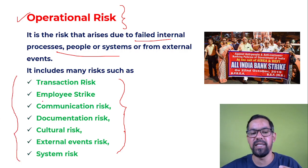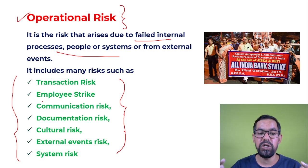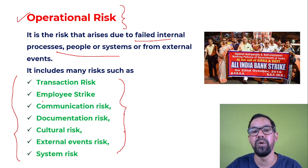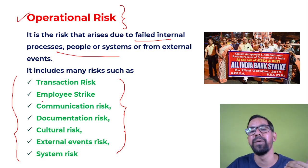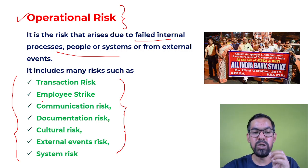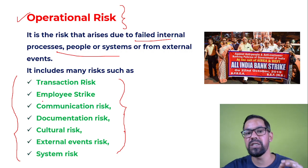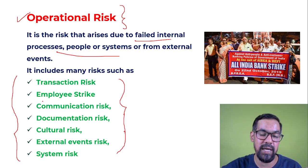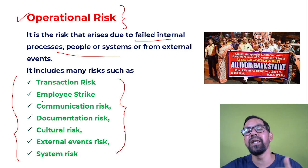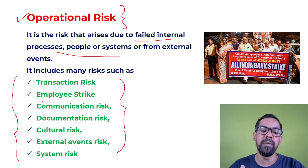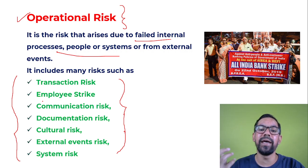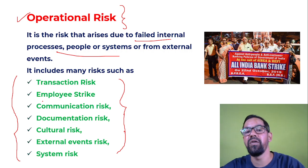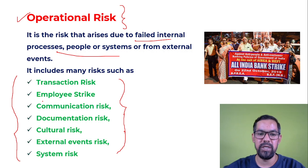Remember these points because examiners often ask which type of risk an employee strike belongs to. Anything that hampers the overall operation of an organization or bank, causing losses, is part of operational risk. External events like riots, system failures like computer failures, and process failures are all generally part of operational risk.